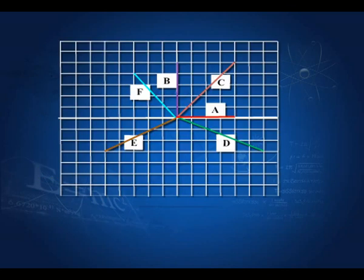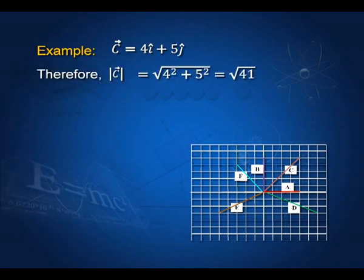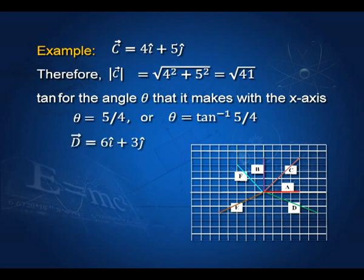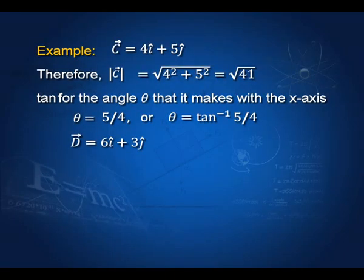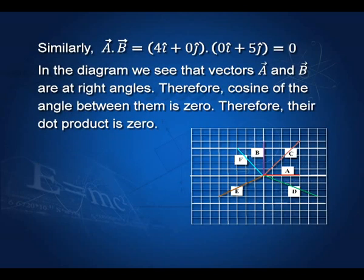Let us take an example. Here is a vector C with coordinates 4 and 5, so we write it as 4 i-cap plus 5 j-cap. The magnitude of C is the square root of 4 squared plus 5 squared, which is the square root of 41. The angle theta it makes with the x axis satisfies tan theta equals 5 over 4, so theta equals inverse tan of 5 over 4. For another vector D equal to 6 i-cap plus 3 j-cap, you can compute C dot D. Also, A dot B is given as an exercise and you can see that A dot B equals 0.